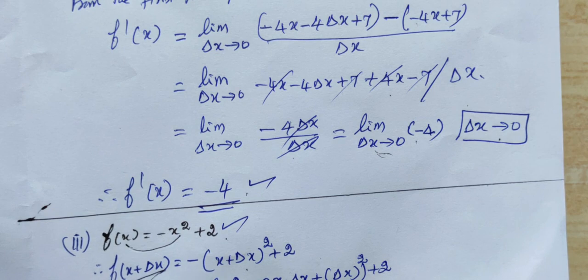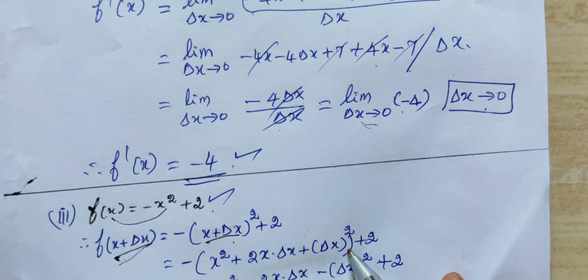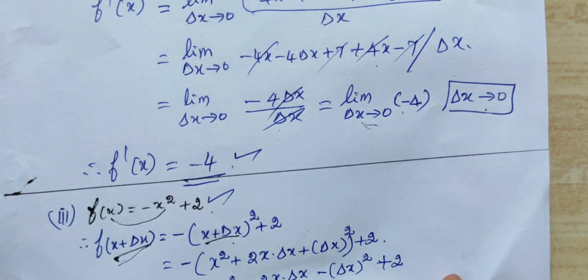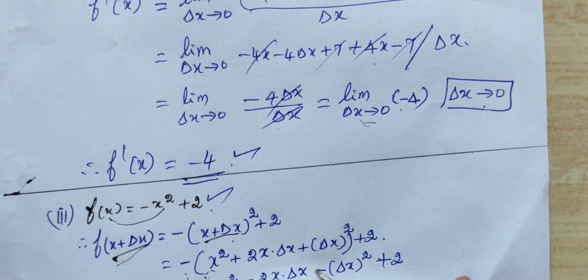x plus delta x is squared, so a plus b squared. Expand here. If you have minus here, this minus is equal to the other term.